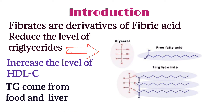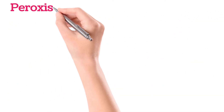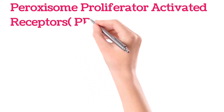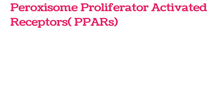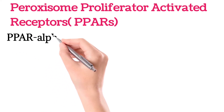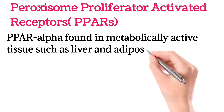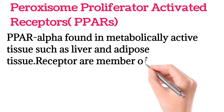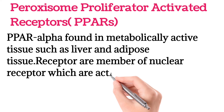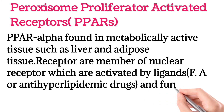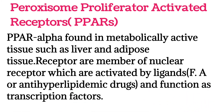Before going toward the mechanism of action of fibrates, we must know about PPAR-alpha. PPAR-alpha stands for peroxisome proliferator-activated receptors. These receptors are located on the nuclear membrane and are found in metabolically active tissues such as the liver and adipose tissues. They are members of nuclear receptors activated by ligands — fatty acids or anti-hyperlipidemic drugs — and function as transcription factors. When fibrates bind to these receptors, they are activated.